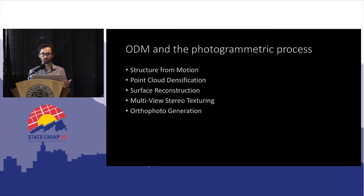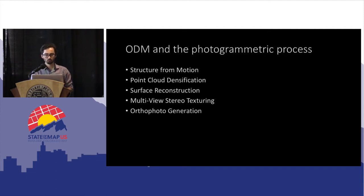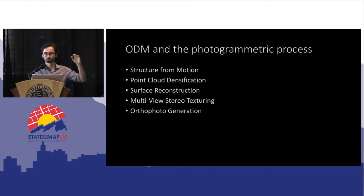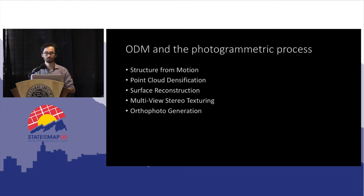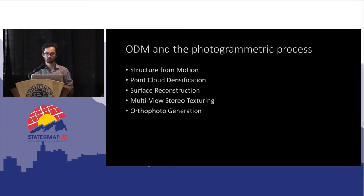So what does Open DroneMap do and how does it work? It's a pipeline. It starts with structure from motion, which matches images together using the motion of the drone and creates a sparse point cloud of tie points tying all the images and cameras together. Then we densify that into a very dense three-dimensional point cloud. Then we do a surface reconstruction, texture over that surface, and build an orthophoto mosaic from that textured surface.